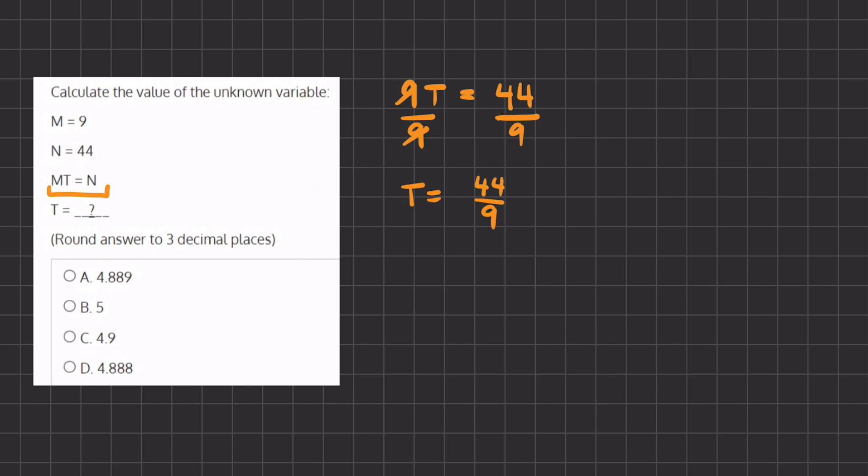Now, all of our answers are in decimal form, and make sure to keep this in mind that we have to round to 3 decimal places. All right, so if we take this 44 divided by 9 and we want to turn it into a decimal,